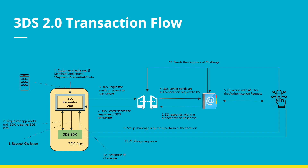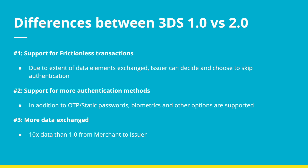This is how a 3DS 2.0 transaction flow looks like. What is the main difference between 3DS 1.0 and 2.0? First, the frictionless flow where the issuer is able to determine if a challenge is required or not. And the second one is more authentication methods — apart from standard OTP or static passwords, thanks to the SDK there could be other authentication methods used.